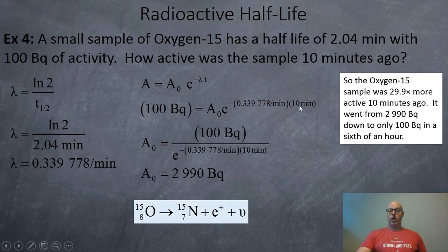So that's 100 becquerels equals the old activity e to the negative 0.339778 per minutes times 10 minutes. And so what we're going to do is cross multiply that over. And once we cross multiply and solve that, we get 2,990 becquerels.